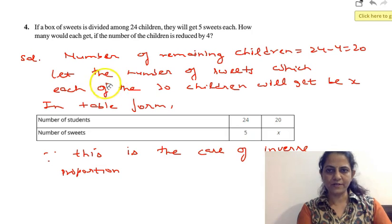Now we will solve it. Number of remaining children will be 24 minus 4, that would be 20. Now let the number of sweets which each of the 20 children will get be x.